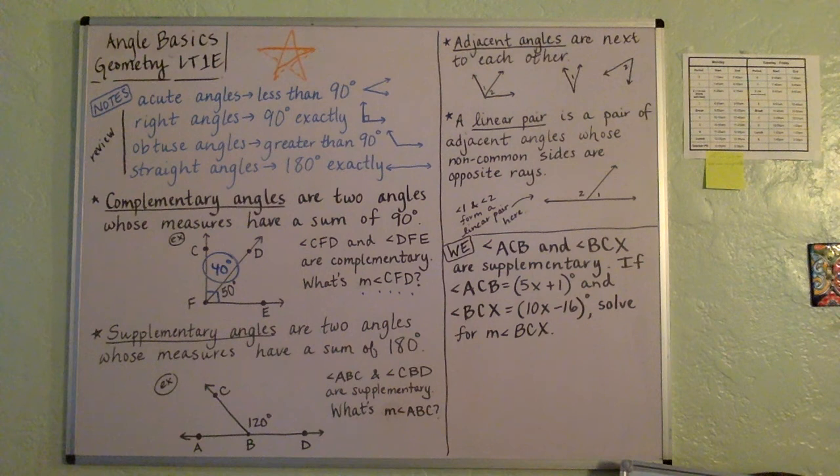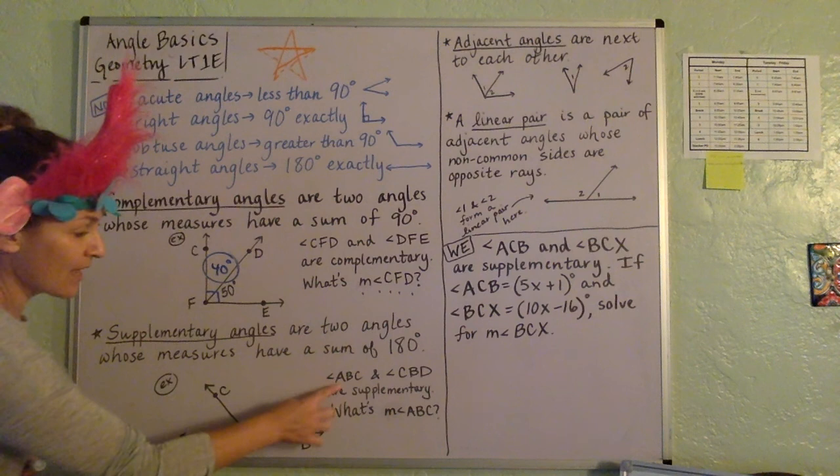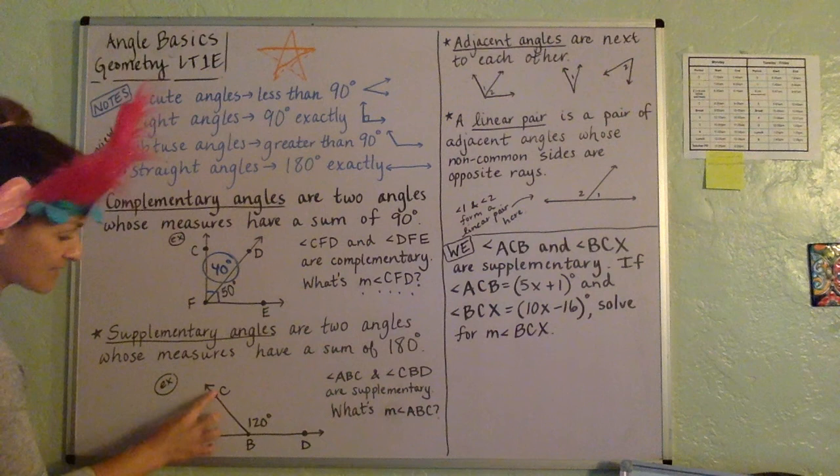Supplementary angles are two angles whose measures have a sum of 180 degrees. So let's just take a look at this example. Here's our diagram, ABC, ABC, and CBD, CBD, which is already labeled, are supplementary.